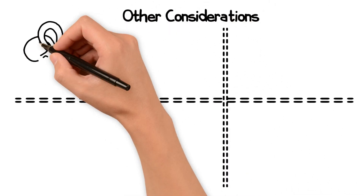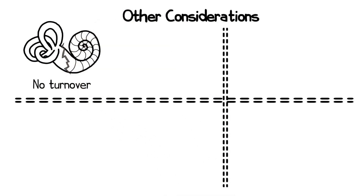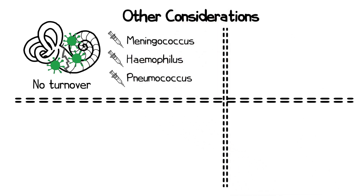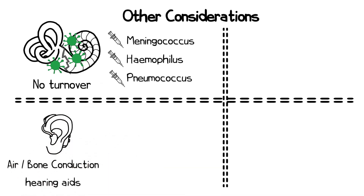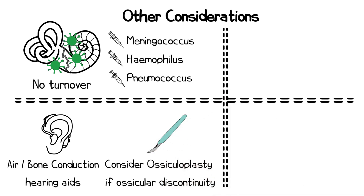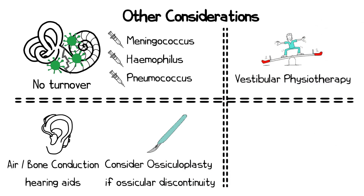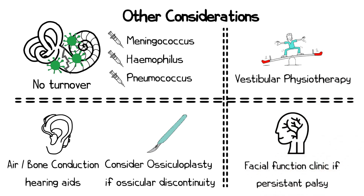The bone of the otic capsule is unique in that it does not turn over, and therefore a fracture involving the otic capsule will remain present for the remainder of the patient's life. The fracture line is therefore a potential site for bacteria to enter the CNS, and so patients with otic capsule involving fractures should receive Meningococcus, Haemophilus, and Pneumococcus vaccinations. Hearing loss should be rehabilitated with air conduction or bone conduction hearing aids as appropriate. In patients who have a persistent conductive hearing loss secondary to ossicular discontinuity, ossiculoplasty should also be considered. Patients may require vestibular physiotherapy if they have significant disequilibrium, and if there is a persistent facial paralysis they may require referral to a specialist facial function clinic for facial physiotherapy and/or reanimation.